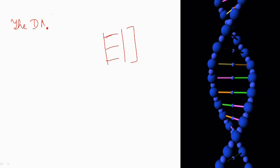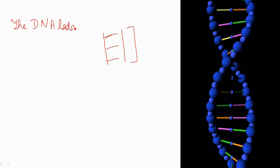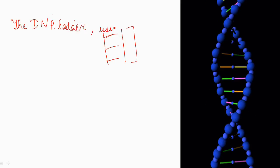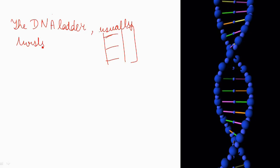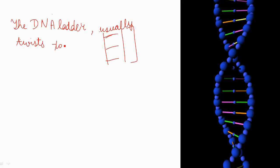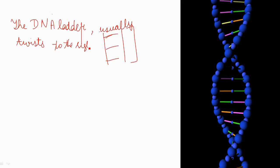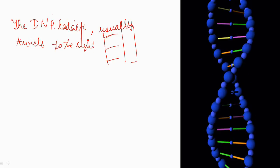The DNA ladder usually twists to the right, that is, it is dextrorotatory. The DNA within each cell is almost 2 meters long, but it is constrained in no more than 0.09 millimeters.